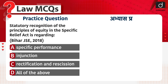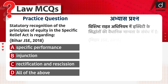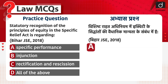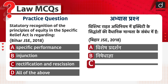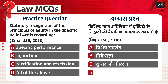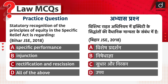अभ्यास प्रश्न: विशिष्ट अनुतोष अधिनियम में इक्विटी के सिद्धांतों की वैधानिक मान्यता के संबंध में कौन सा सही है? विशिष्ट पालन, निषेधाज्ञा, सुधार और निरसन, या उपर्युक्त सभी? Send the answer of this question in the comment section. Thanks for watching. इसका उत्तर हमें comment section में जरूर भेजिएगा। धन्यवाद।